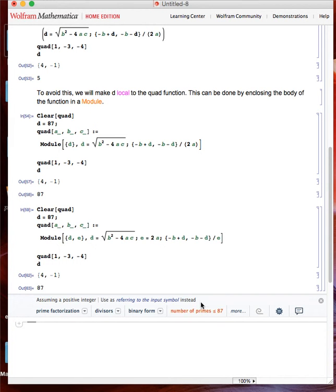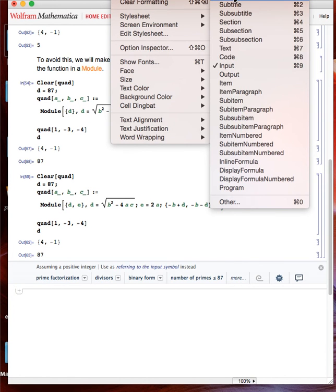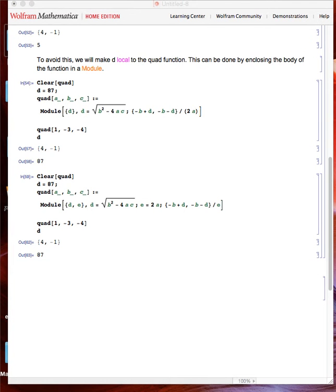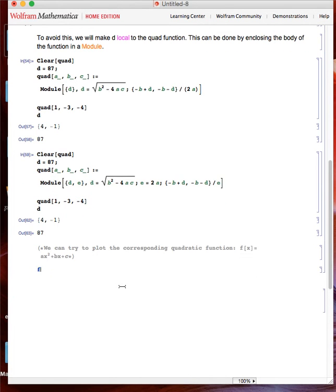Now we can try and plot the corresponding quadratic function. Very easy. Again, function, but now we have 4 parameters. X is going to vary also in order to make the plot.